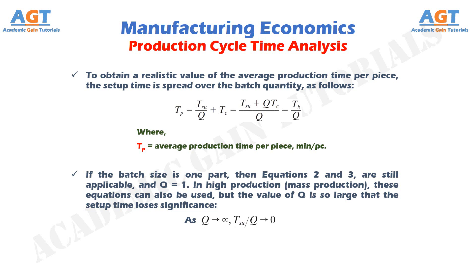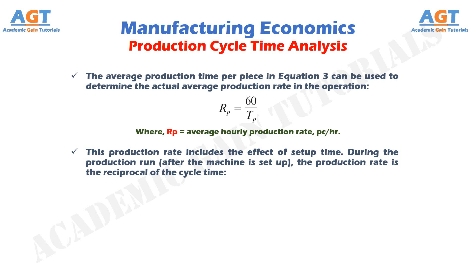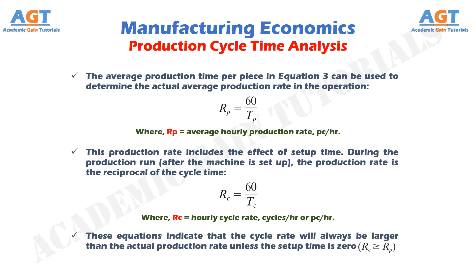The average production time per piece in equation 3 can be used to determine the actual average production rate in the operation: IP equals 60 divided by TP. Where IP represents average hourly production rate, expressed in pieces per hour. This production rate includes the effect of set-up time. During the production run, after the machine is set up, the production rate is the reciprocal of the cycle time: IC equals 60 divided by TC, where IC is the hourly cycle rate expressed in cycles per hour or pieces per hour. These equations indicate that the cycle rate will always be larger than the actual production rate unless the set-up time is zero, given that RC is greater than or equal to RP.